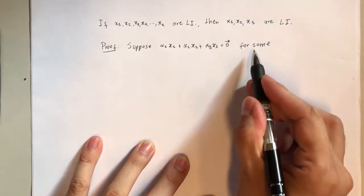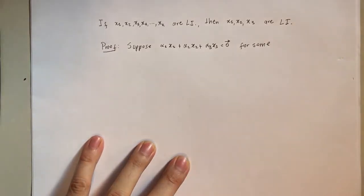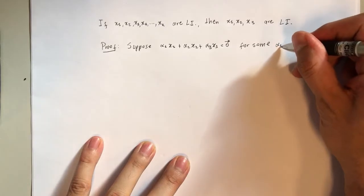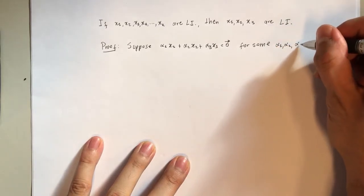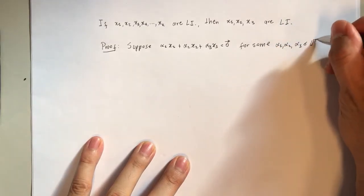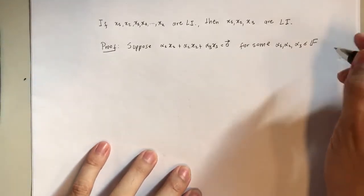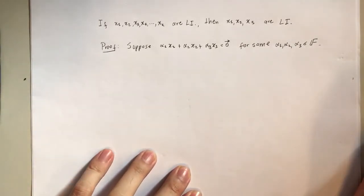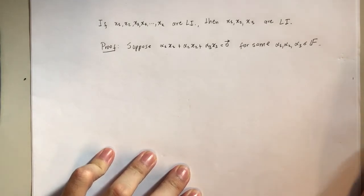For some - note here the use of the quantifier. I'm assuming there exists alpha1, alpha2, alpha3 such that this linear combination is 0. And what we have to show is that alpha1, alpha2, and alpha3 are all 0.